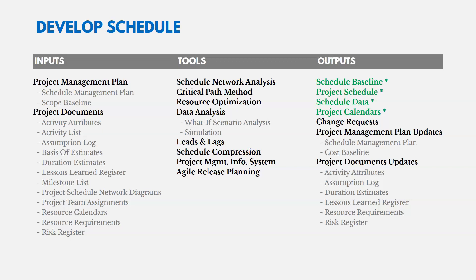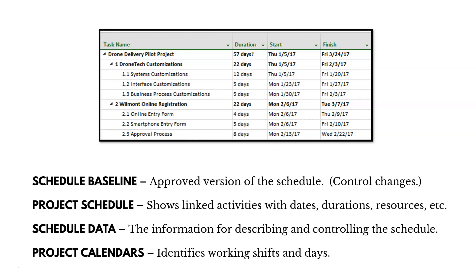The key outputs of Develop Schedule are the schedule baseline, project schedule, schedule data, and project calendars. The schedule baseline is the approved version of the schedule — you control changes to it and compare it to actuals. The project schedule is often something like a Microsoft Project file, showing linked activities with dates, durations, milestones, and resources. Schedule data describes and controls the schedule — similar to what a WBS dictionary is for a WBS. Project calendars identify working days and shifts.